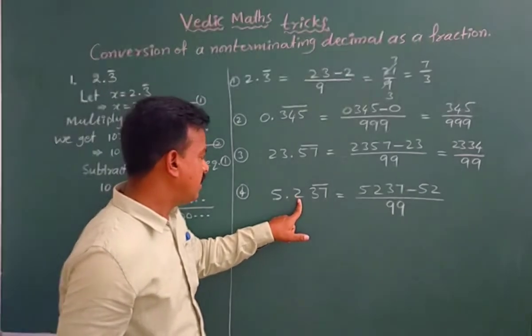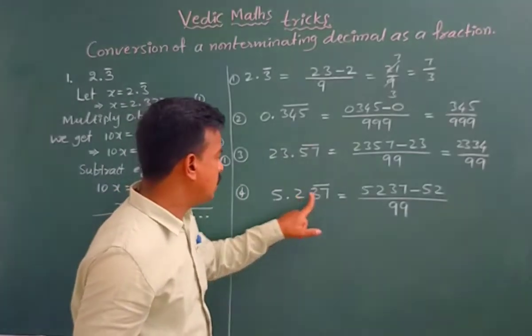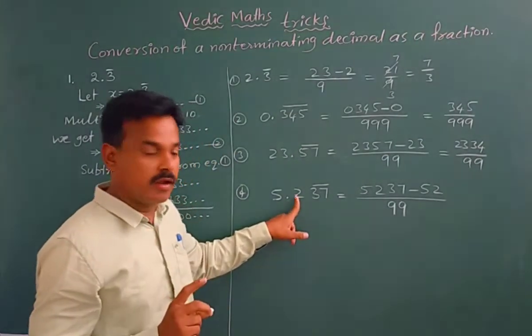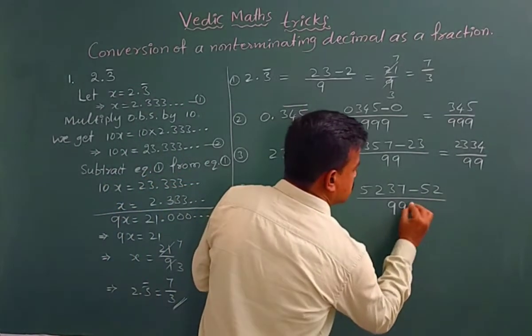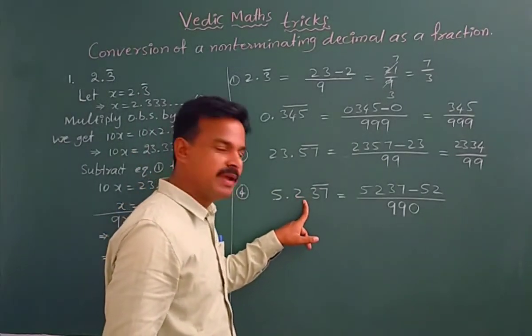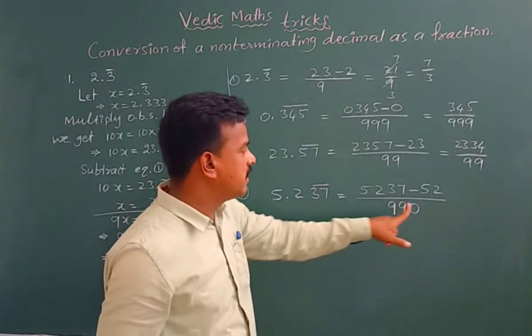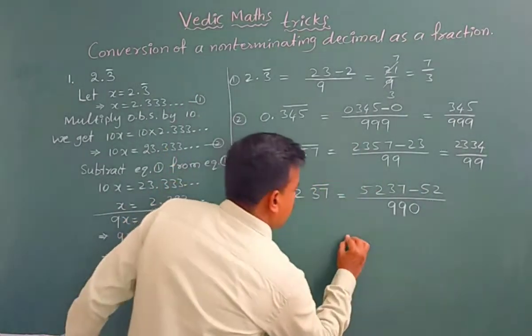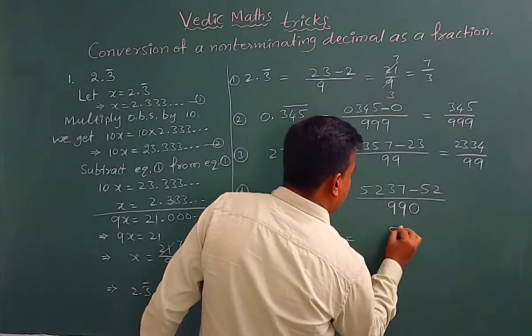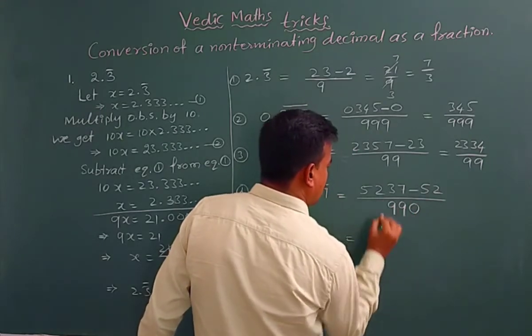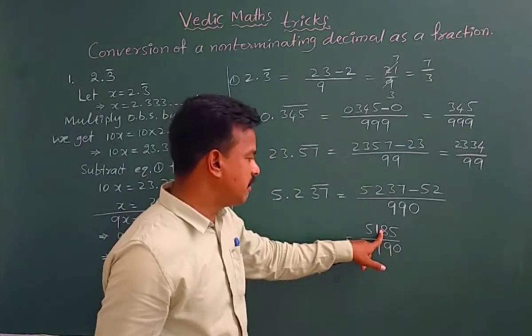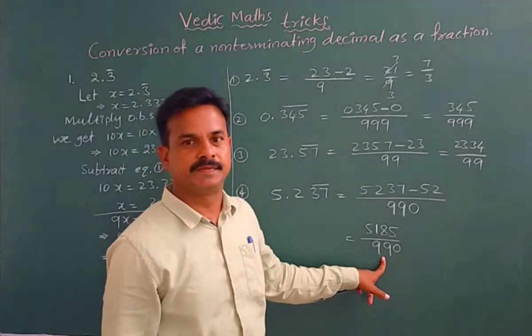But decimal digits, that means after decimal point, 3 digits are there. But you have 2 nines you wrote. For 1 digit there is no bar. For this we have to keep 1 zero. You should write 1 zero. How many digits are there after decimal without bar, for that many zeros we should keep here. That's it. Now subtraction rule, 7 minus 2, 5. And 13 minus 5, 8. Now 1 only. And 5 divided by 990. And it is divisible by 5, so we can cut it.